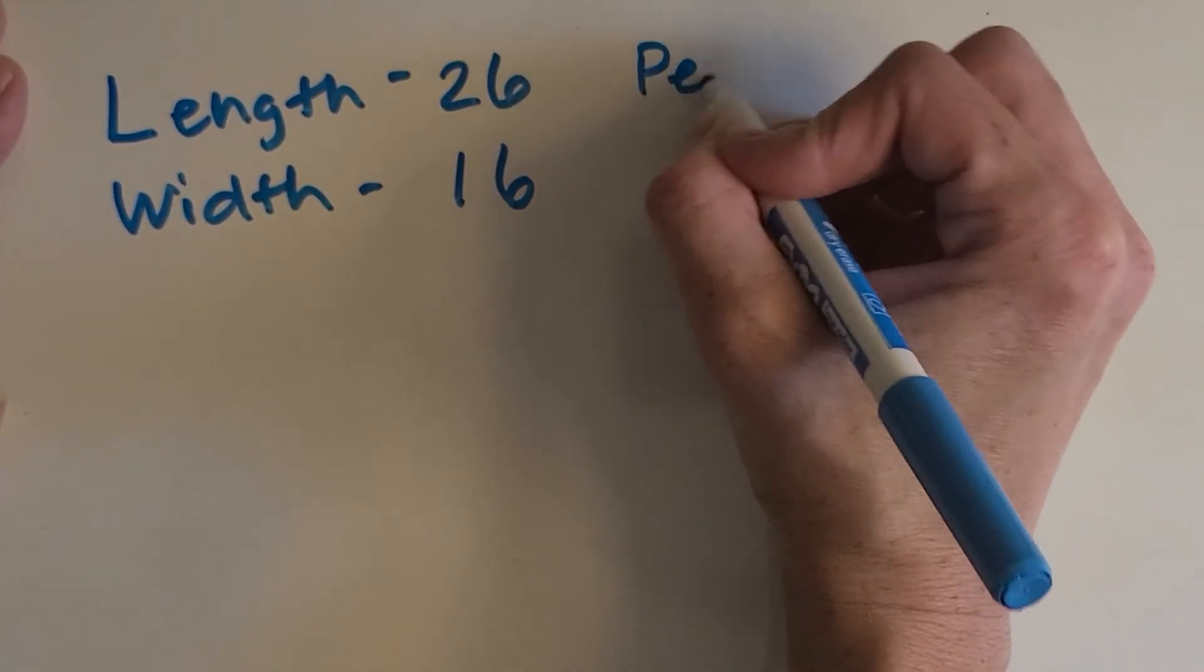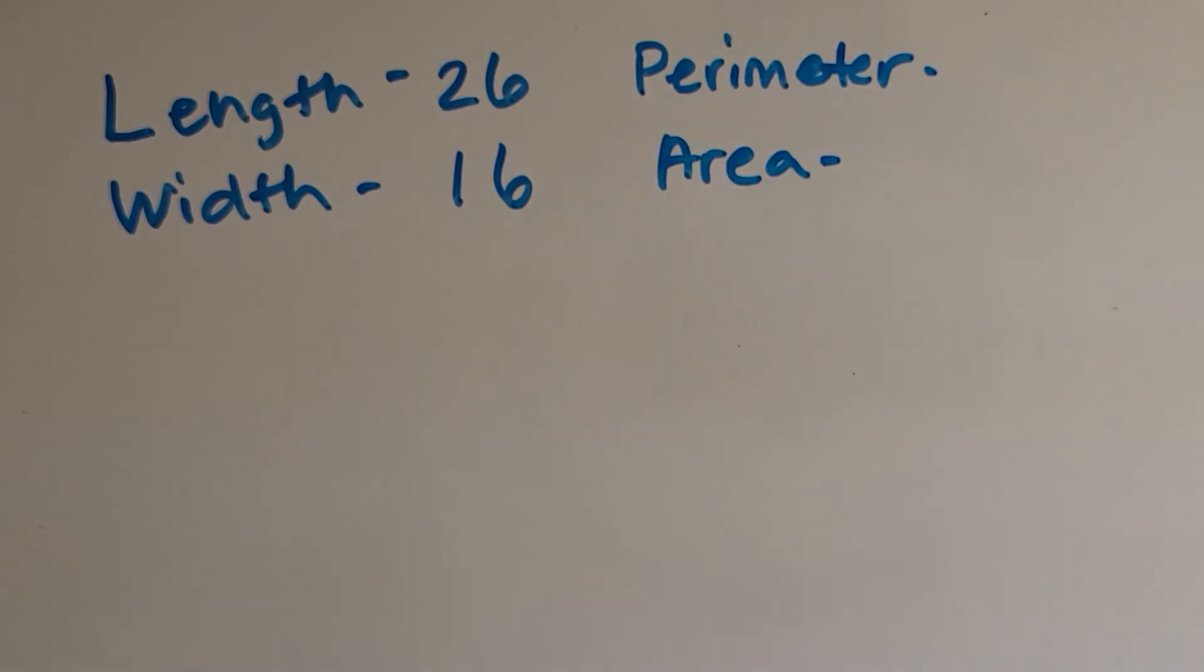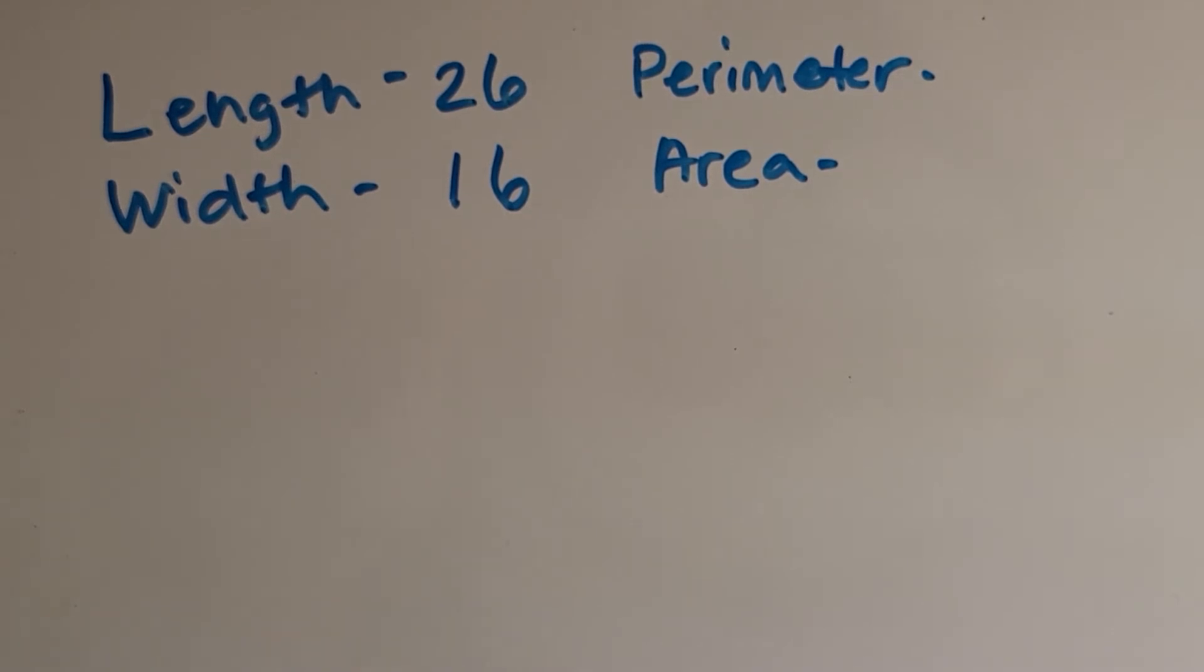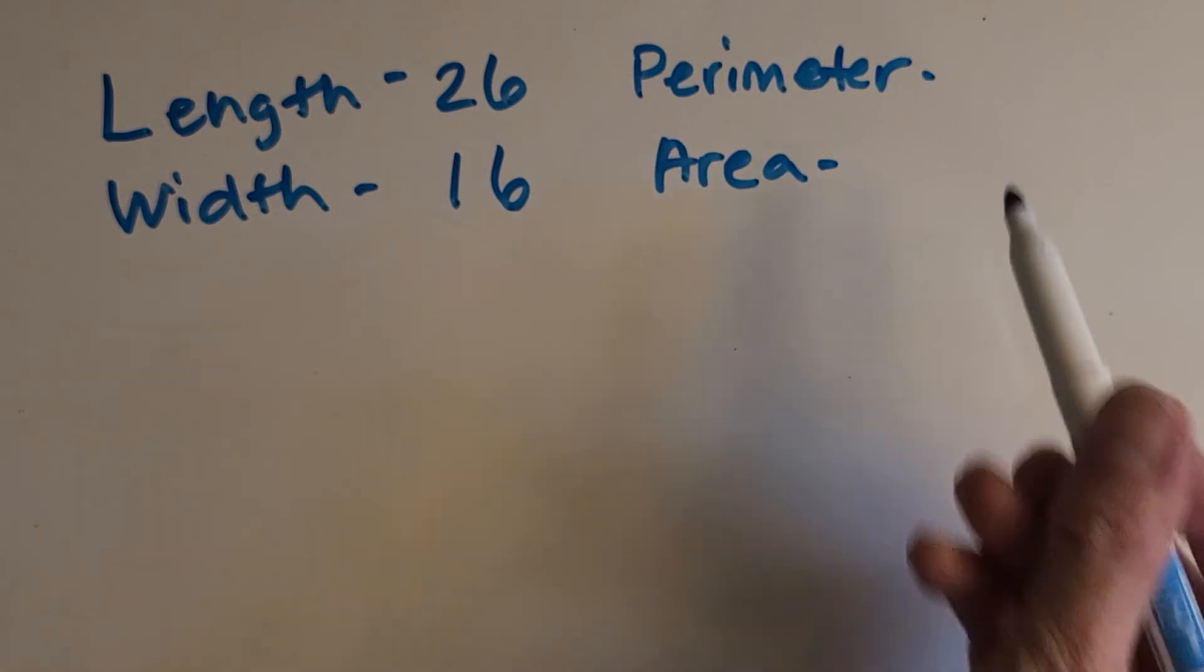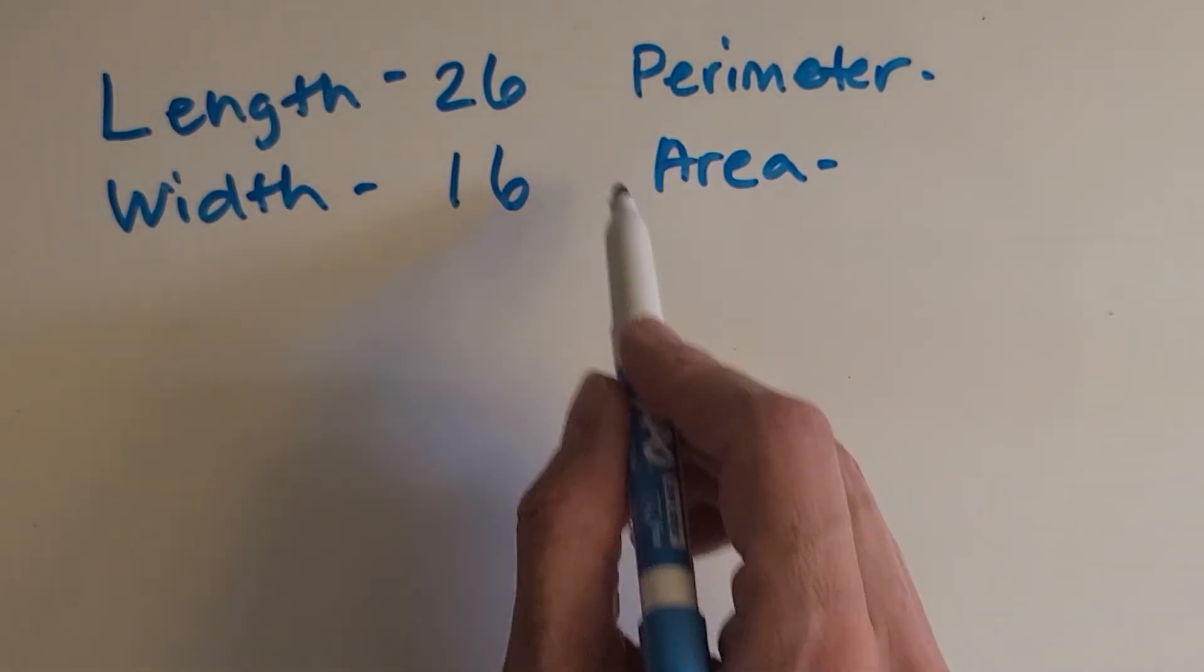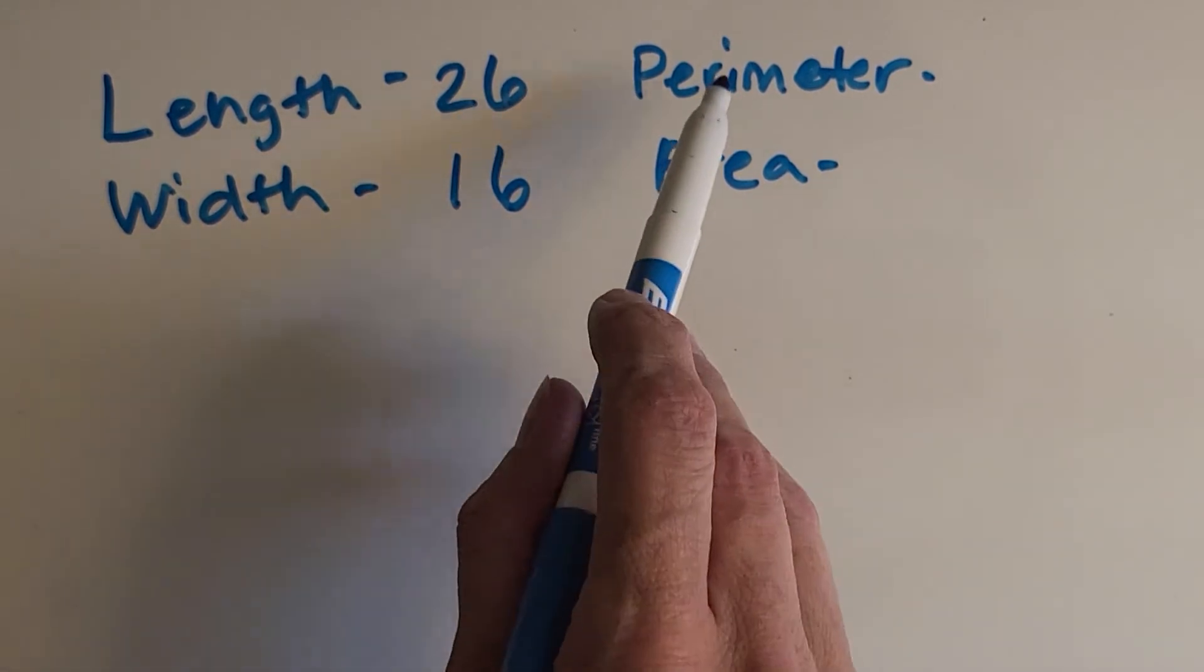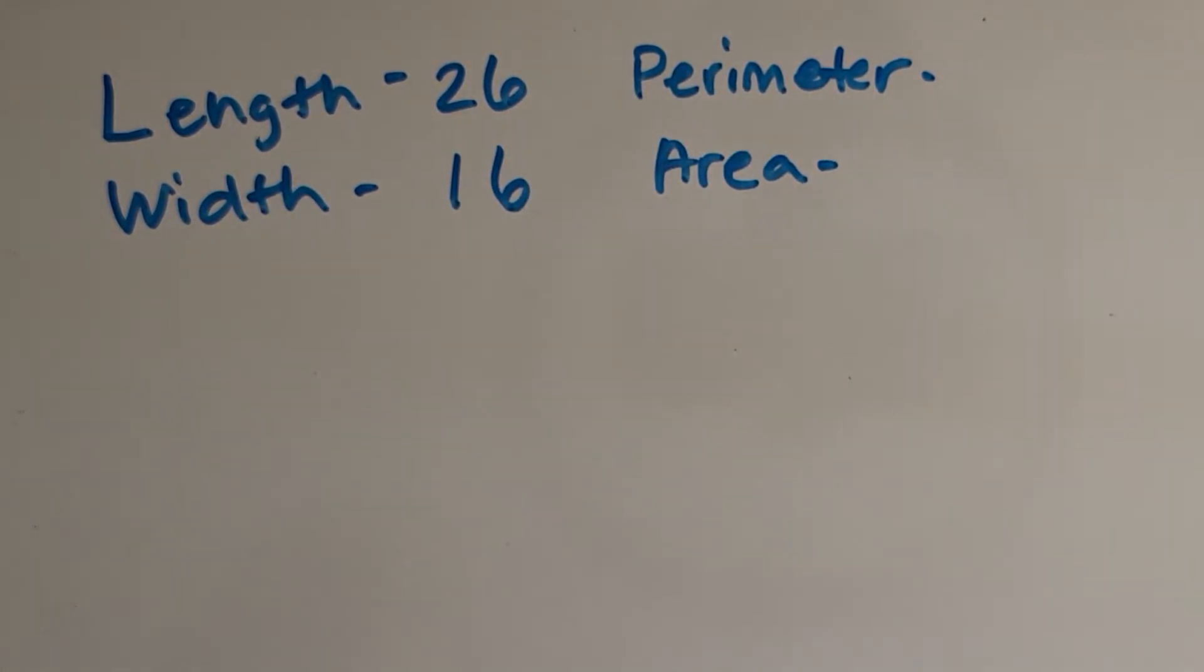Now I'm going to write both perimeter and area. And I want you to see if you can figure out which one I'm asking you for. So if I want to know how many carpet tiles I need to cover this room, is that perimeter or area? So covering the room with carpet. You got it. It's the area. Okay. If I wanted to put a border around the room of some sort of material, what would that be? If I want to put a border around the room? You got it. Perimeter. Okay. So let's pause the video. And I want you to find the perimeter of this room. Then we'll come back and check your work.